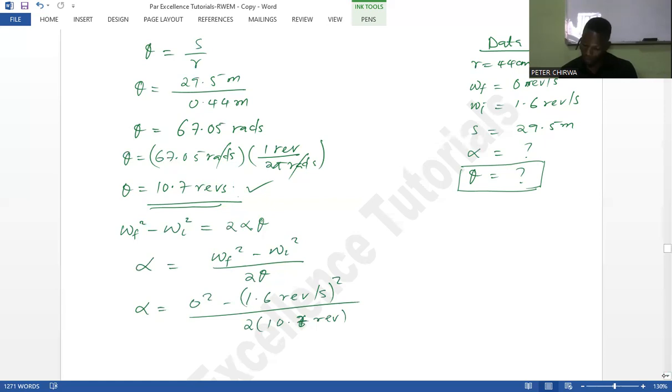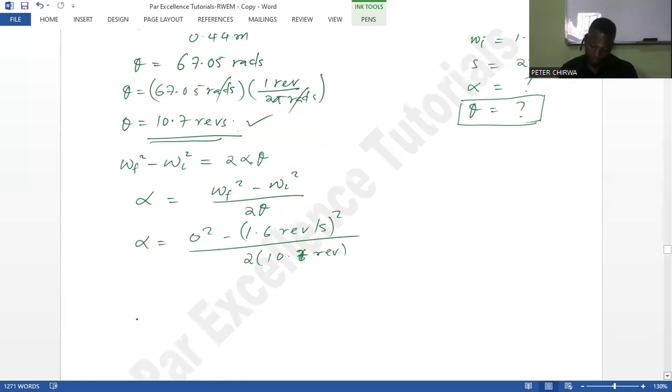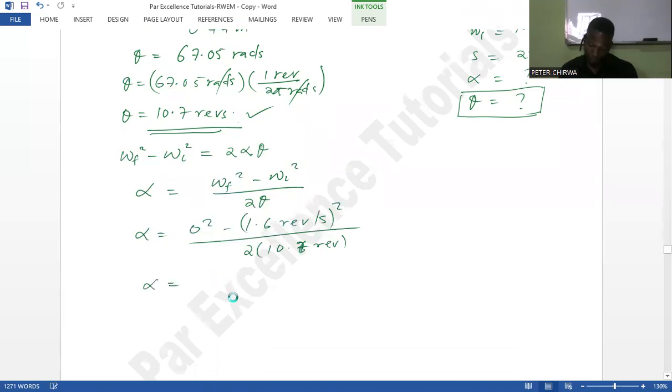All right, so what we're going to have is zero minus—the initial is 1.6 squared—minus 2.56 over, this is going to be 21.4. So I'm going to have negative, and when I divide, I'm going to have negative 0.12 revolutions per second squared.